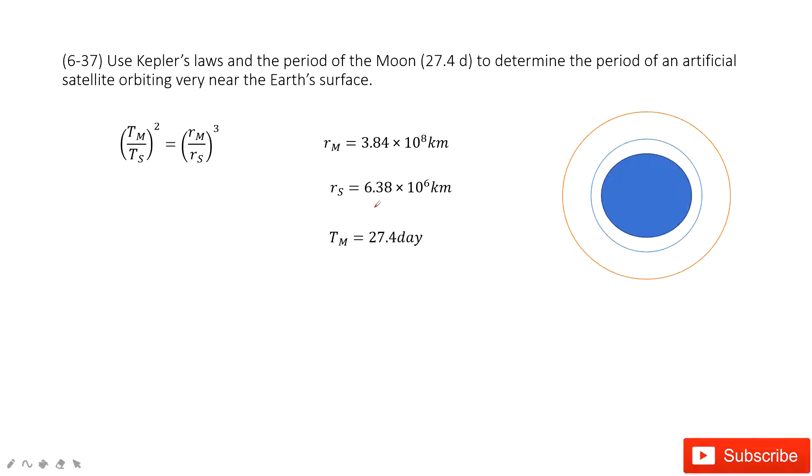In this one, we will do a very simple application of Kepler's law. We can see this is the Earth, and this one is the artificial satellite. And it's very clear, very near to the Earth's surface.